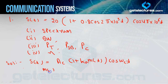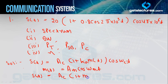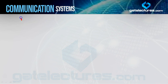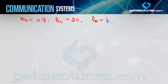By comparing the given equation with the standard single-tone AM equation, you can directly read off the values. The modulation index ma = 0.8 (given directly). The carrier amplitude AC = 20 (given directly). The modulating signal frequency fm: from cos(2π×10³t), we get fm = 10³ Hz = 1 kHz.